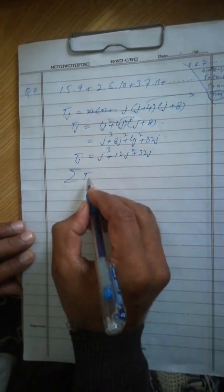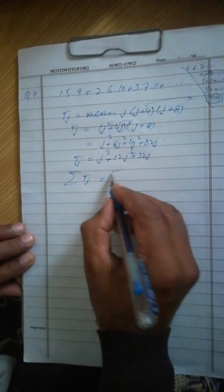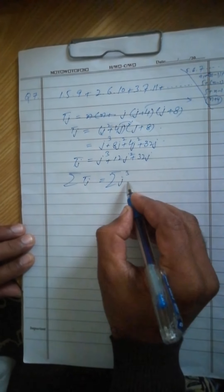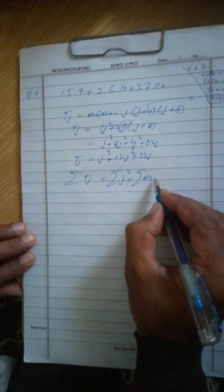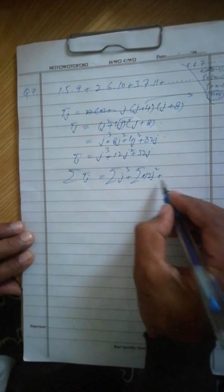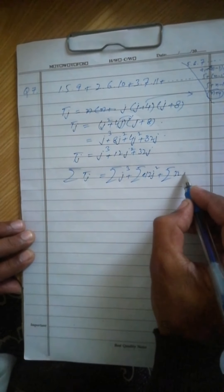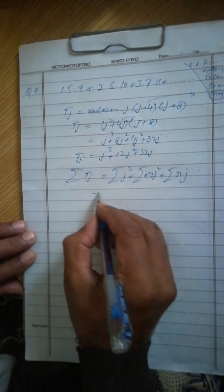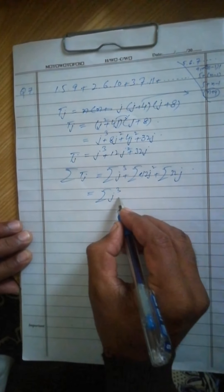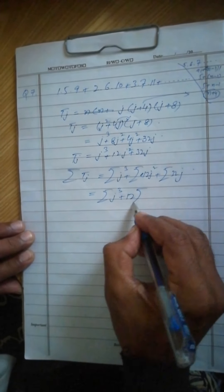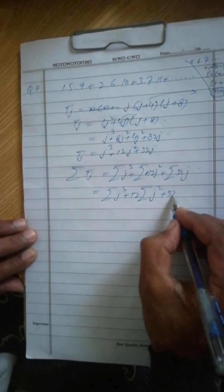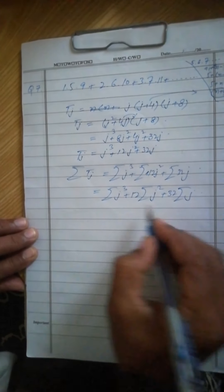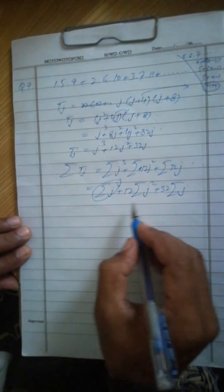So this is the final general term. Now sum of the general term: sum of j³ plus sum of 12j² plus sum of 32j. This is equal to sum of j³. Here 12 is constant, sum of j². Similarly 32, and sum of j.